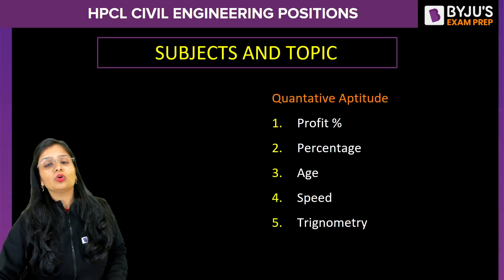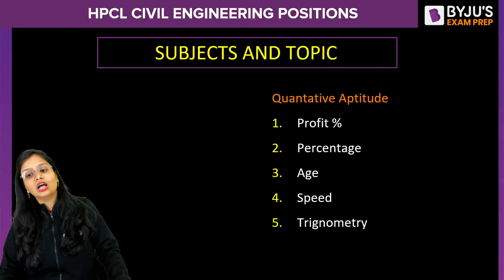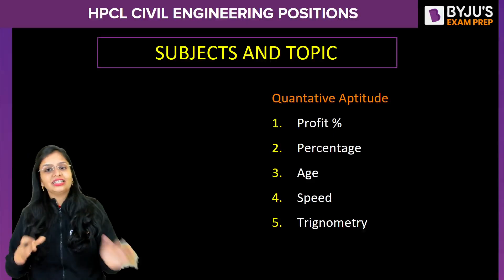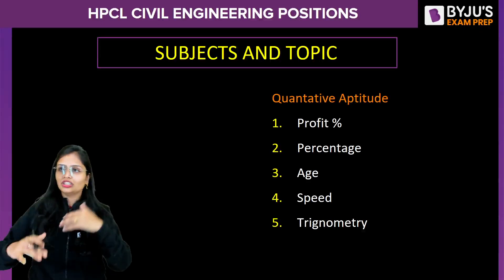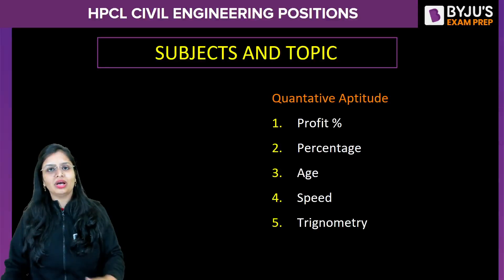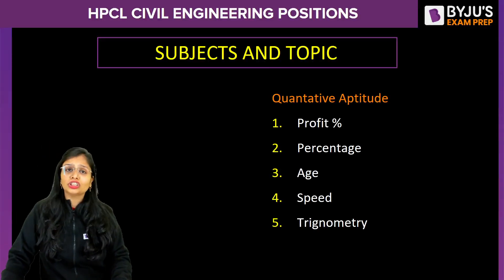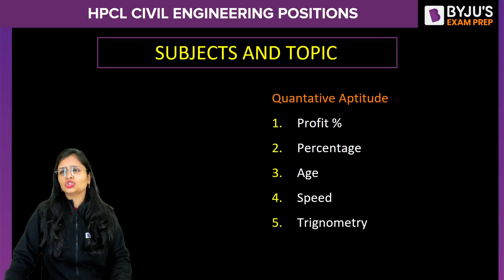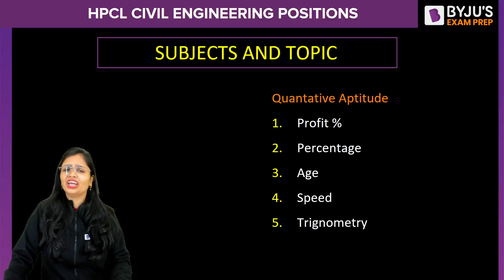In quantitative aptitude, I have made you solve many questions. Topics included profit percentage, percentage separately, age questions — for example, what was the age ratio two years before, and what is the ratio after two years? Questions from speed and distance were asked. Two questions from trigonometry were also asked and they were very simple.